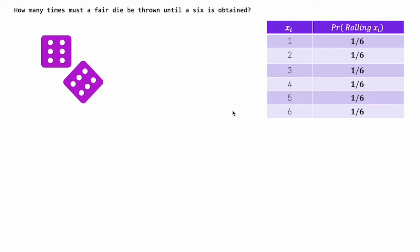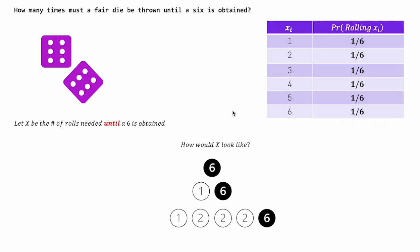So let's let this number be x, right? Let the number of rolls needed until a 6 is obtained, let this number be x. Now how would x look like? x could be equal to 1, you roll the first try, you get a 6, x could be equal to 2, you roll the second try, you get a 6, and then the first try, you don't get a 6. And to those of you who can count that high, x could even be 5. 6 on the last 5th roll, and the first 4 rolls, you don't get a 6. And so on and so forth.